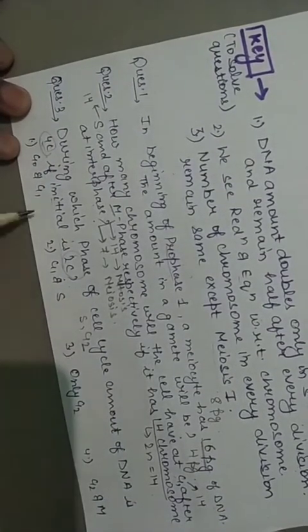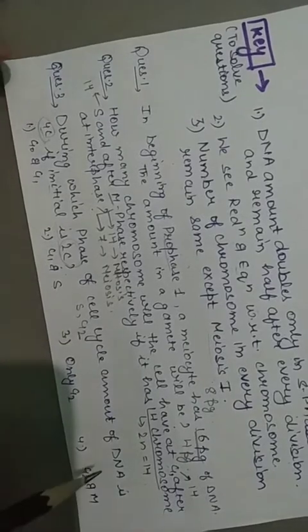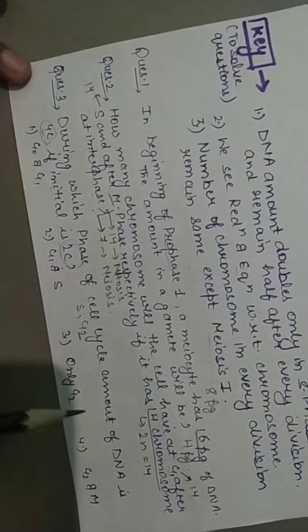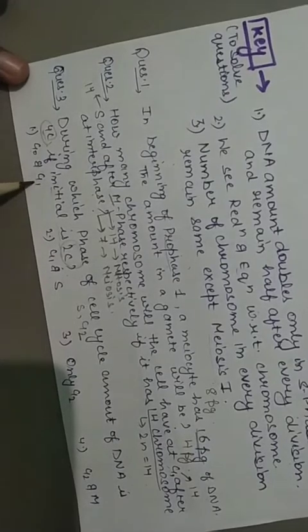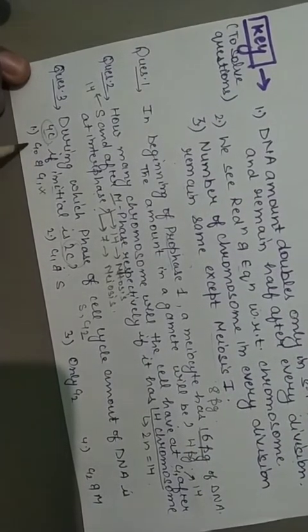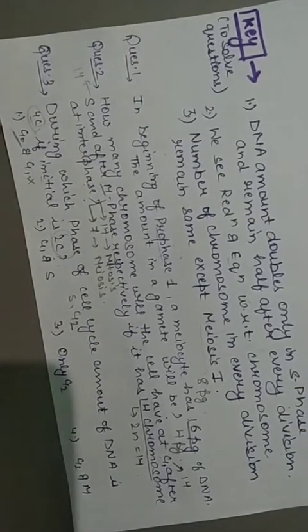To hum yeh check karte hai yeh dono hai ki nahi. Phir aage M phase ke andar wo ja ke divide ho jata hai. Thik hai. G2 ke andar to wo same hi raha ega. G0 aur G1? To G0 to option waise hi kharab galat ho gaya kyunki G0 mein to cell waise hi exit kar jata hai.